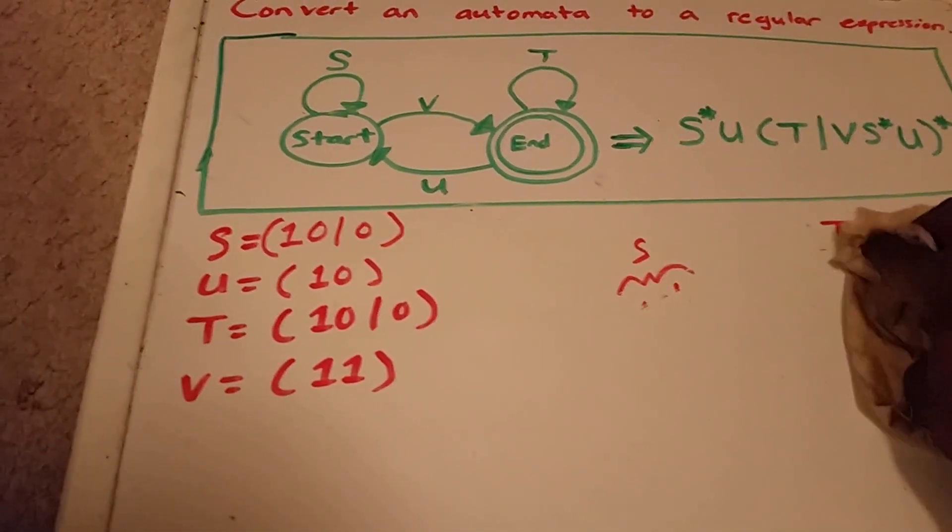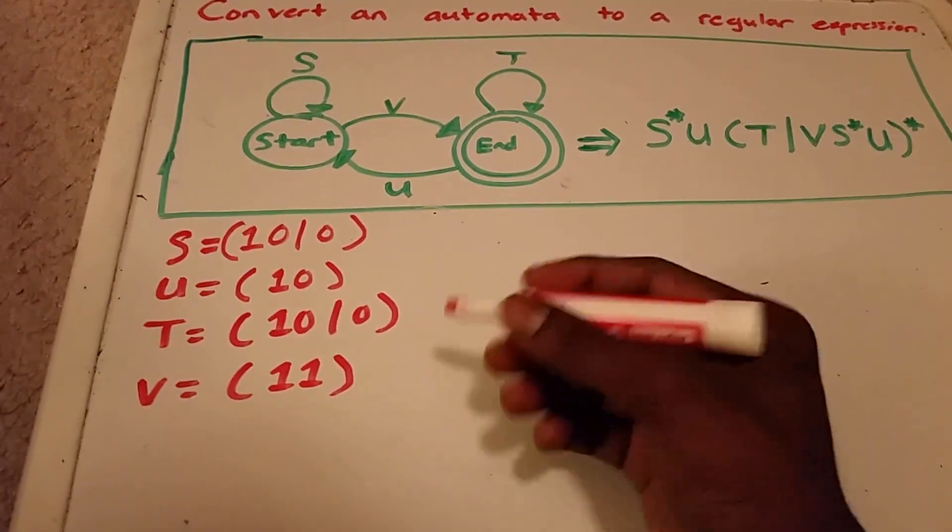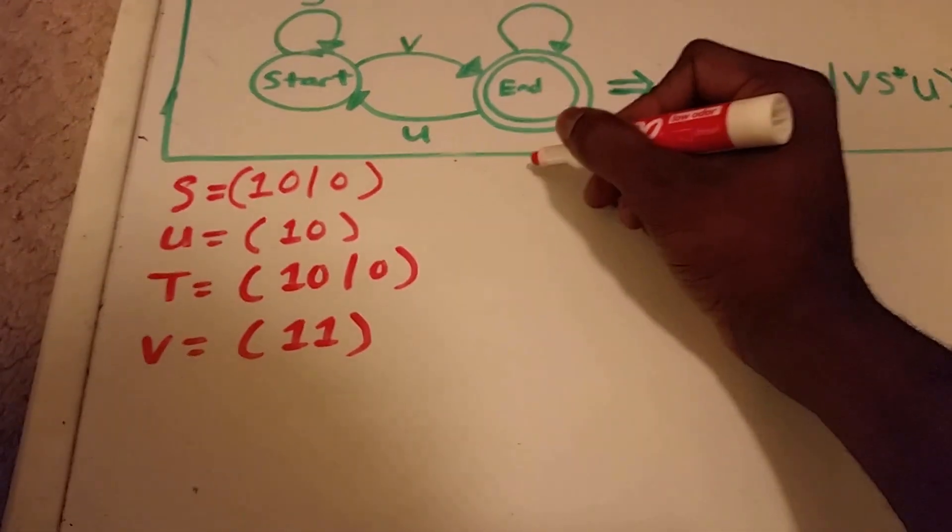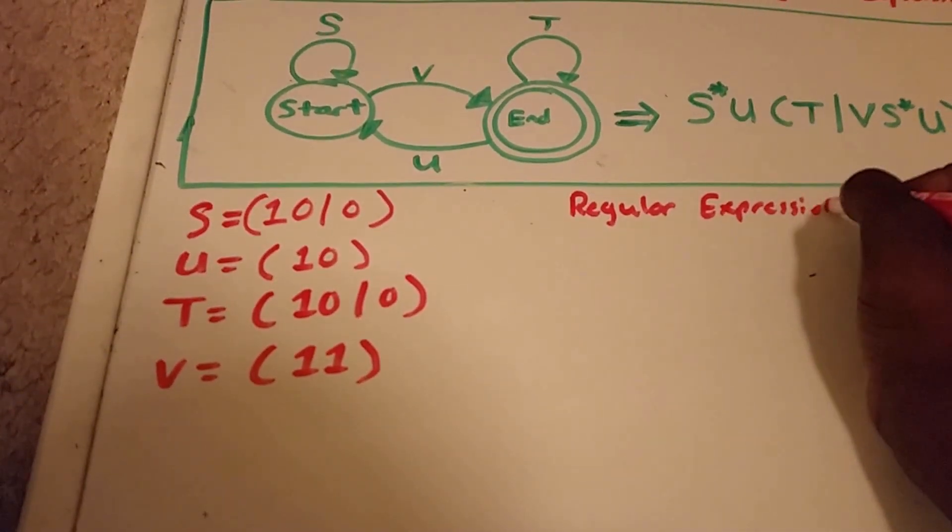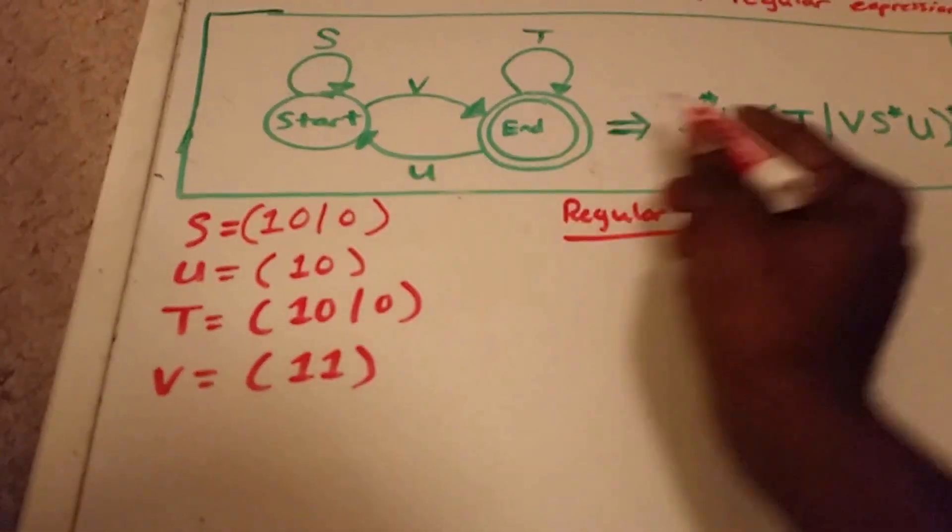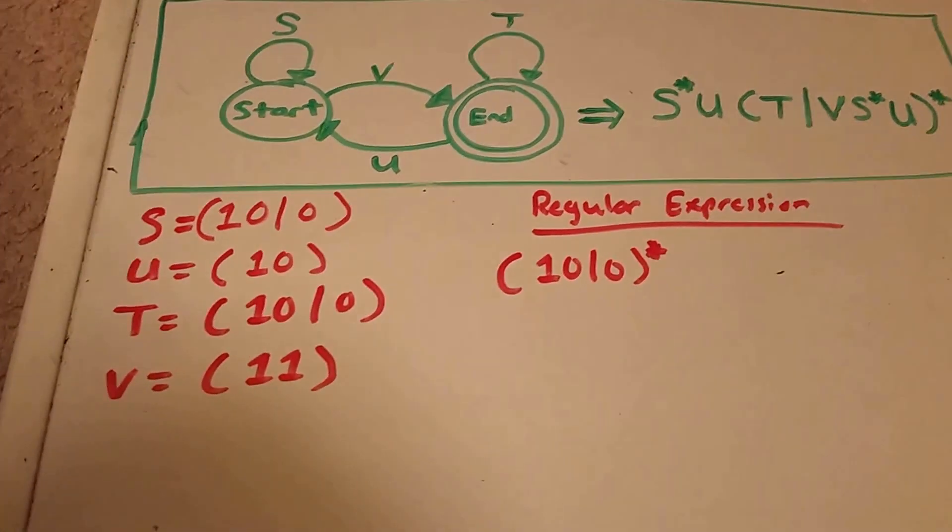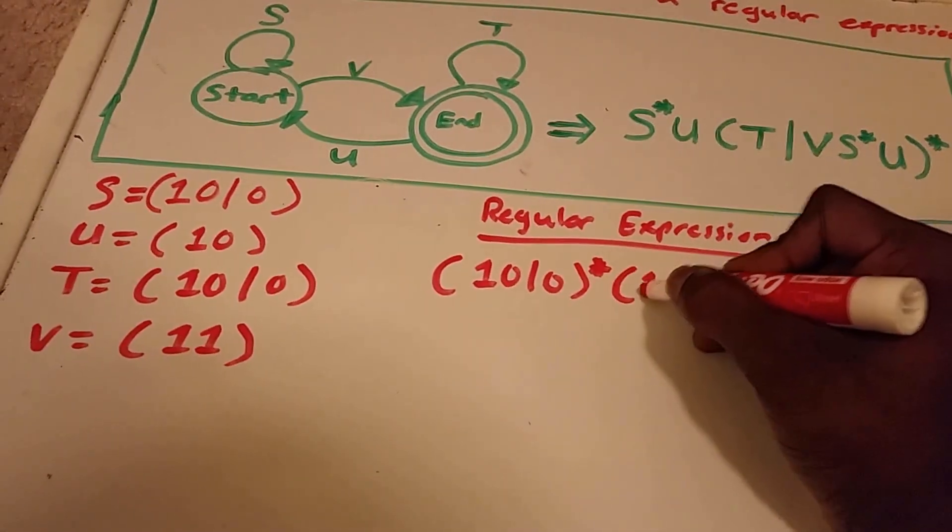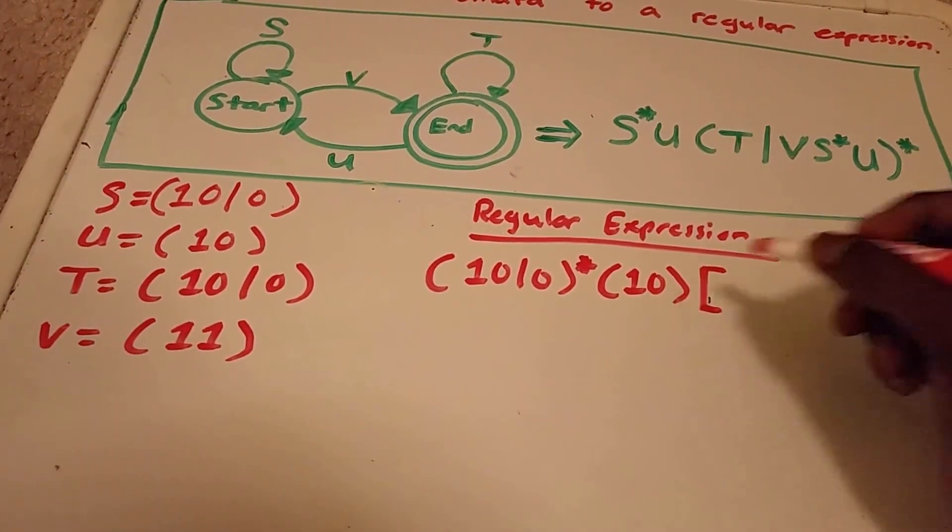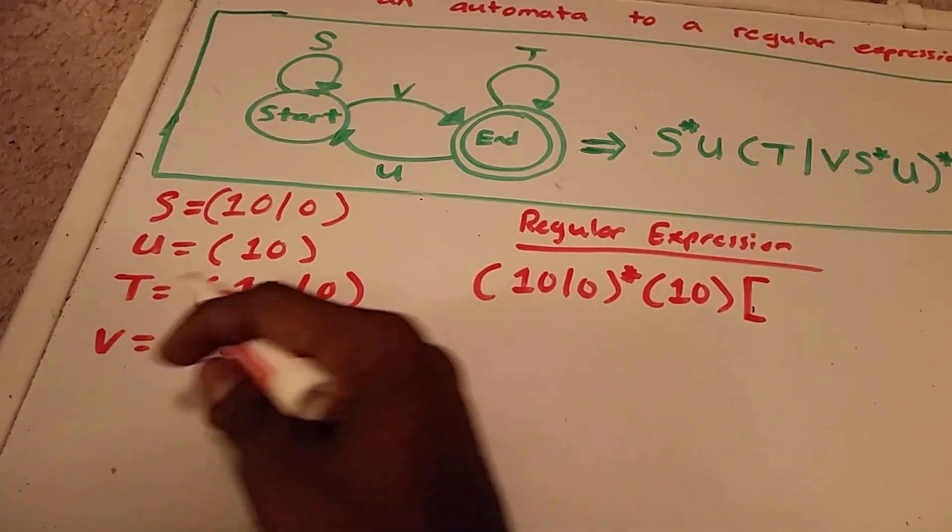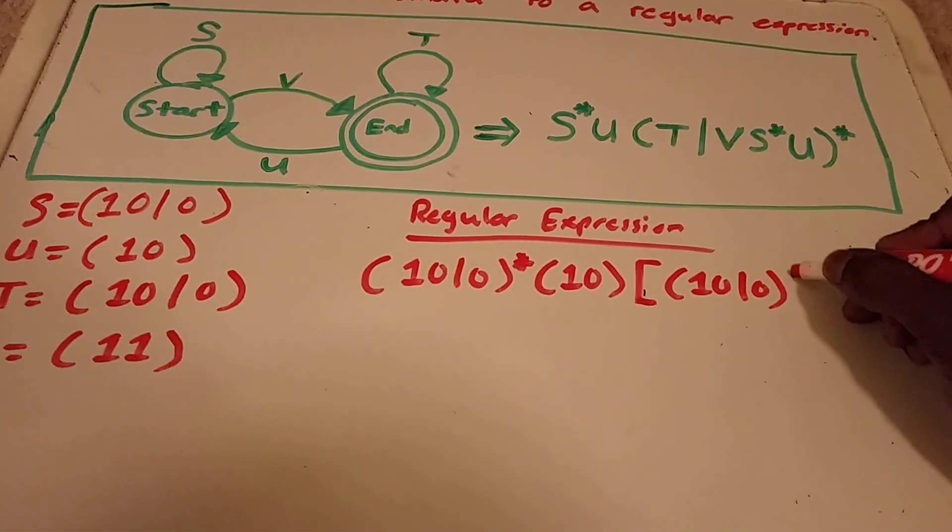So, now we can use this information to convert it into a regular expression. So, now our regular expression will be our S star. So, we have S, it's going to be one, zero, or zero, star. Then we have U, which is one, zero. Then, we have parentheses, I'm just going to use a big bracket so you can see what's going on. Then, we have T here, so we're going to use our T there, which is one, zero, or zero. Then we have a big OR here.